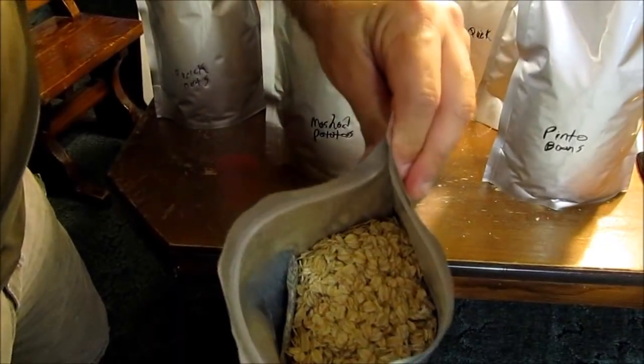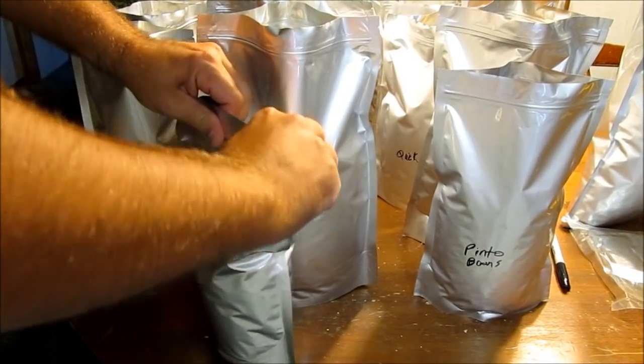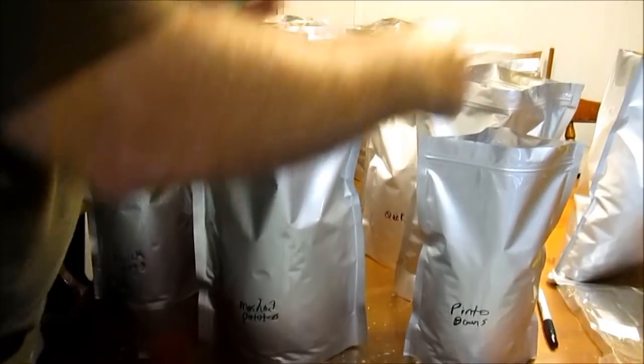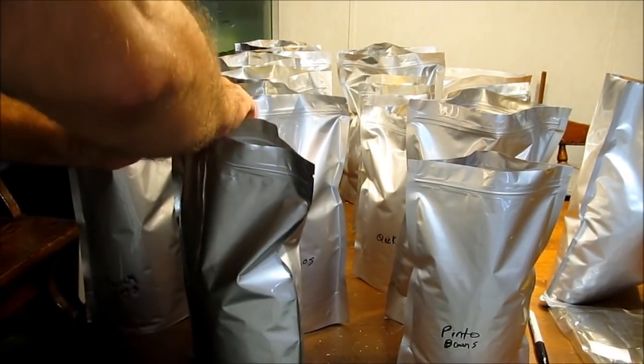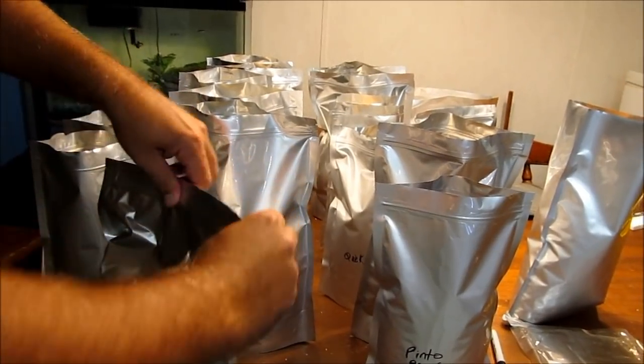And what we're doing is we've got the oxygen absorber inside the oats. We're just going to use the ziplock to seal it, push the air out. Put it over here. The iron's heating up right now. Should be ready to go. Push the air out.